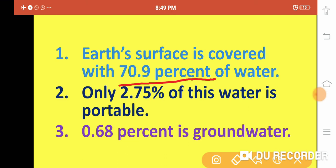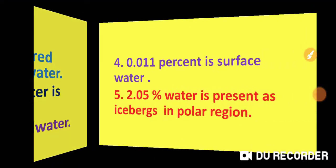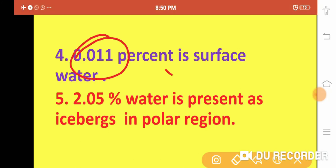Potable water is the water which is fit for the drinking purpose and is free from harmful bacteria, germs, etc. Of the remaining water, 0.78 percent is ground water, 0.01 percent is surface water, and 0.05 percent is water present in icebergs in the polar region.